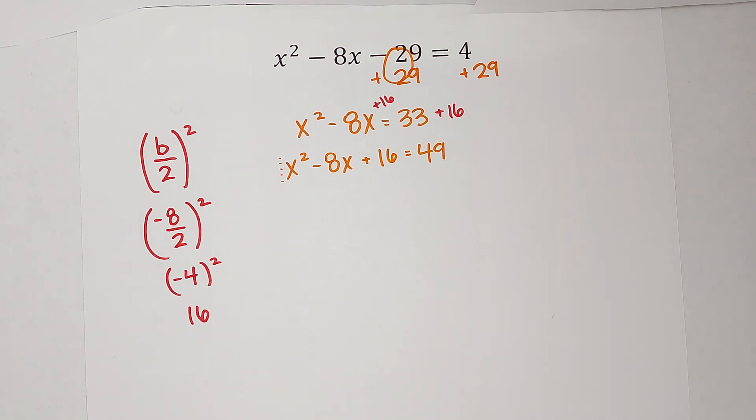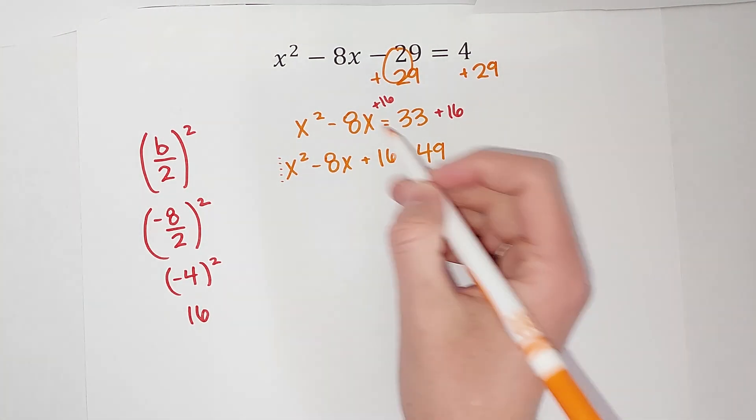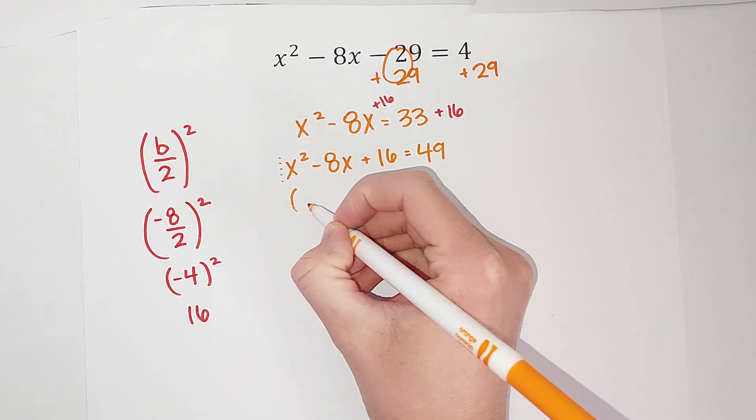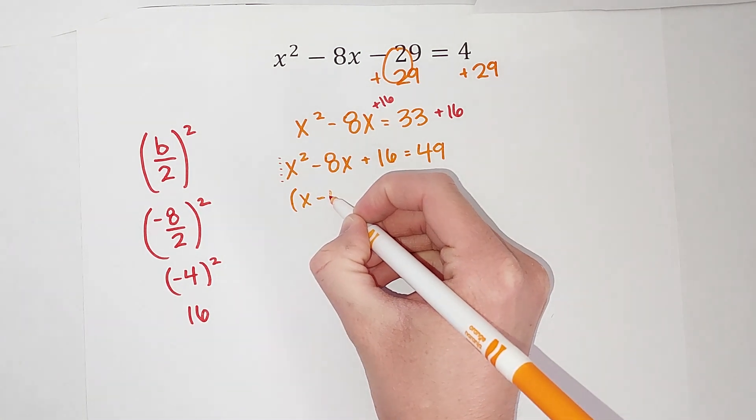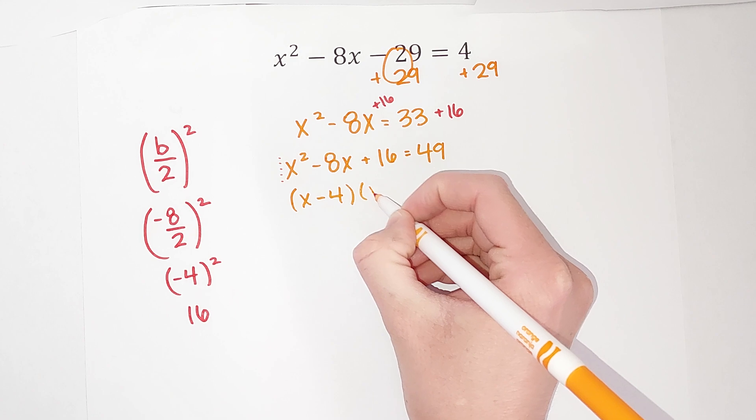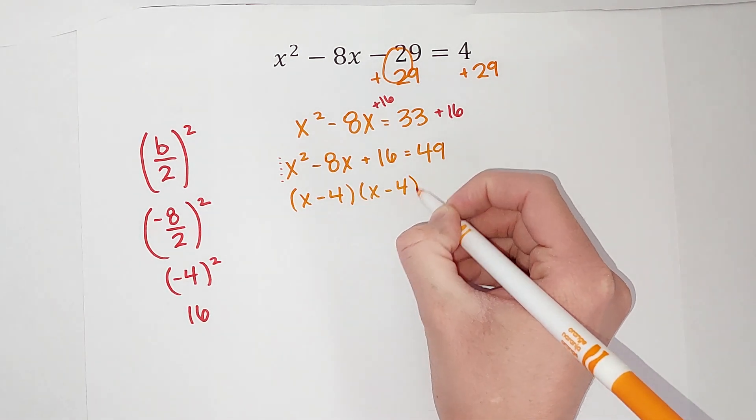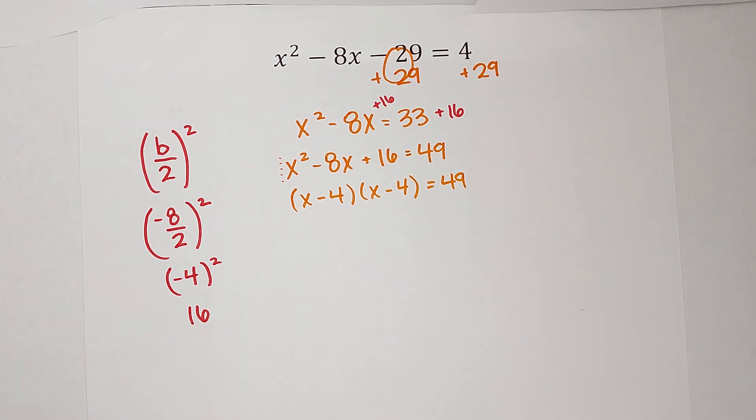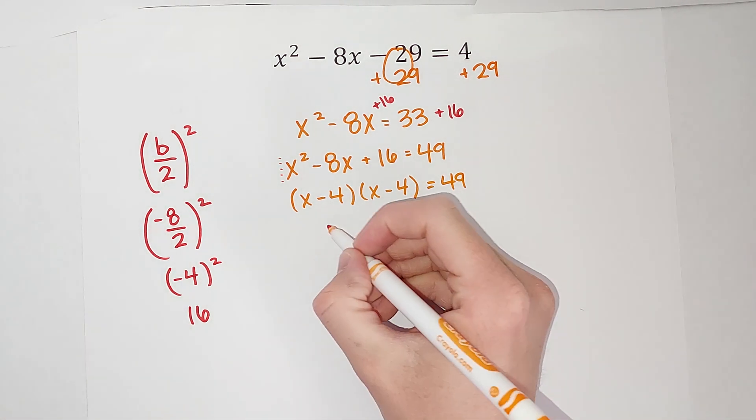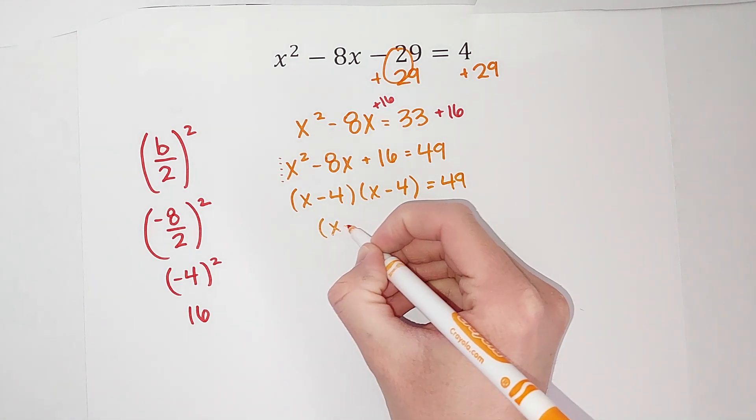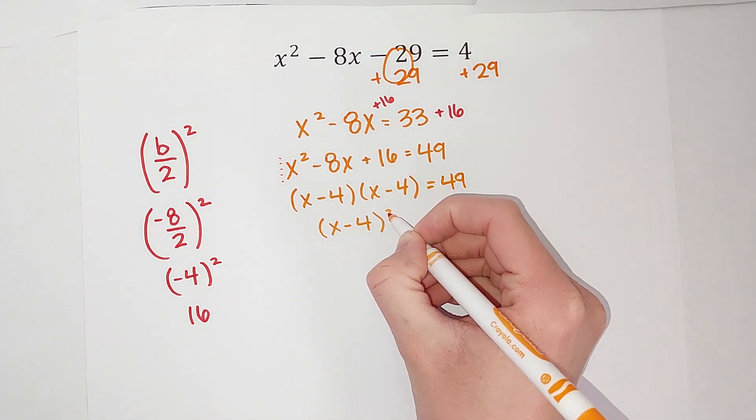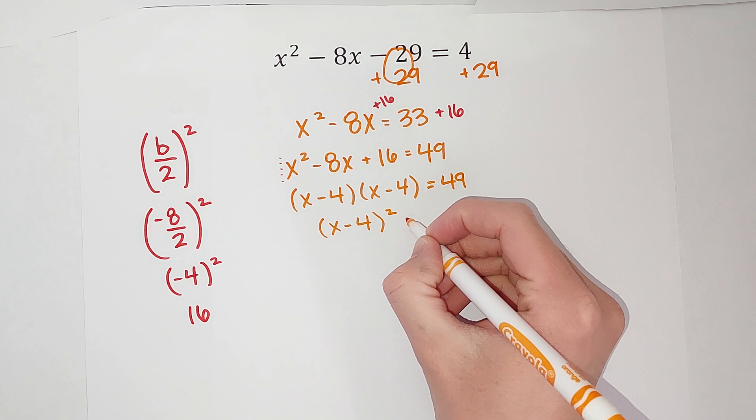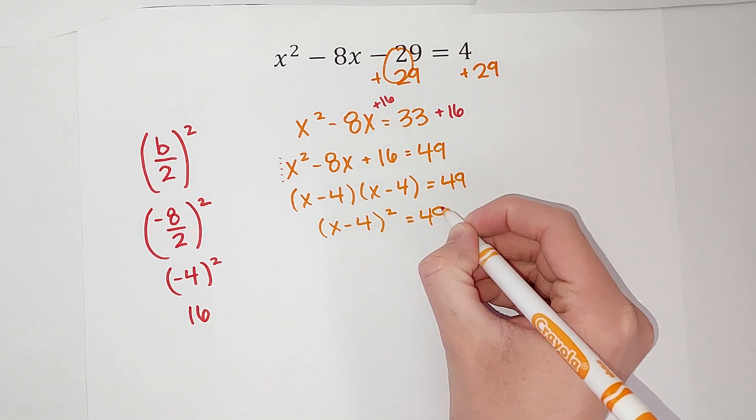So when I do that, that means I would have x minus 4 times x minus 4, and this still equals 49. Now I can write x minus 4 times x minus 4 - they're the same - so I can write that as x minus 4 squared, equals 49.